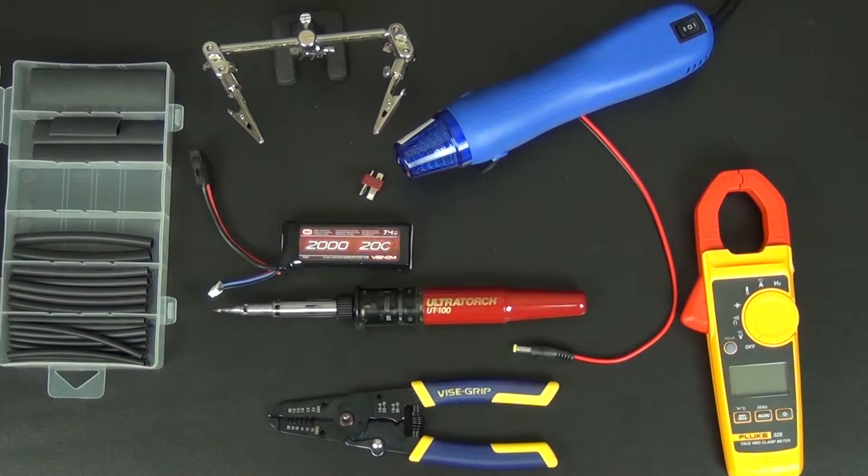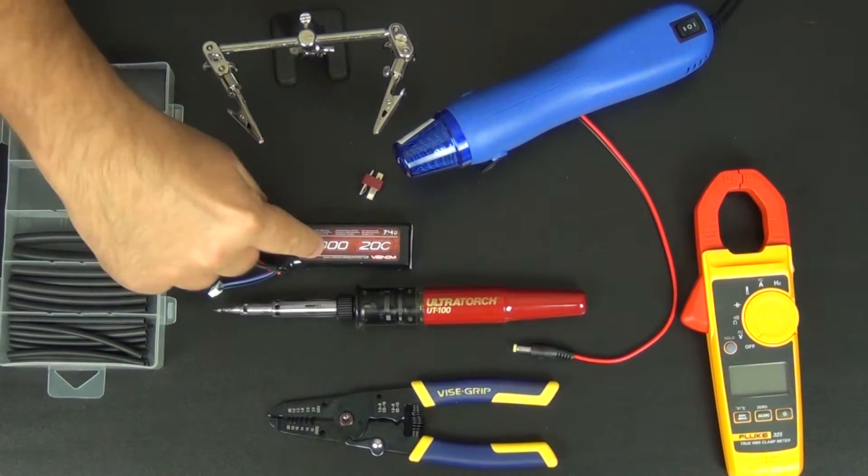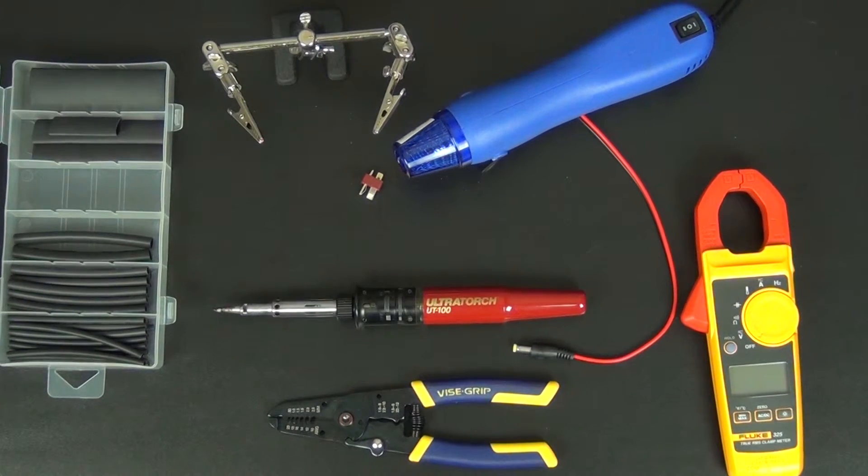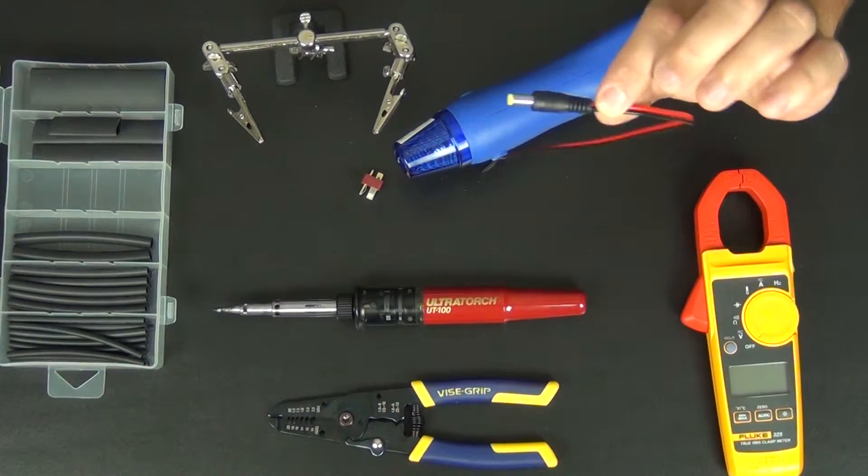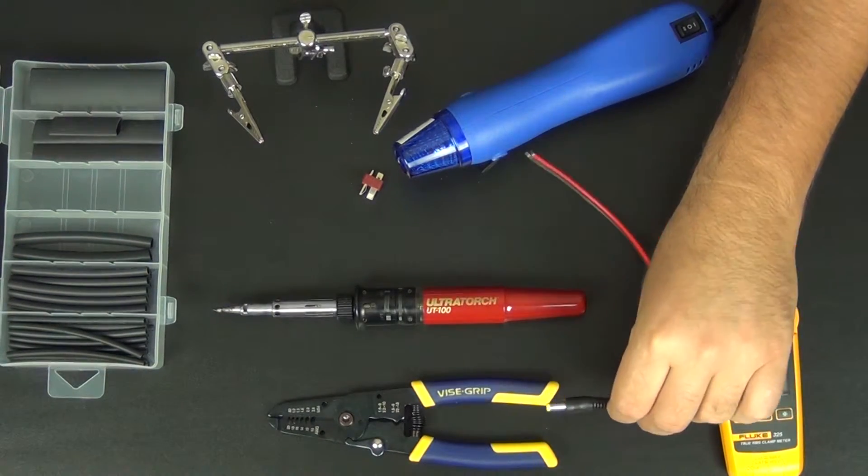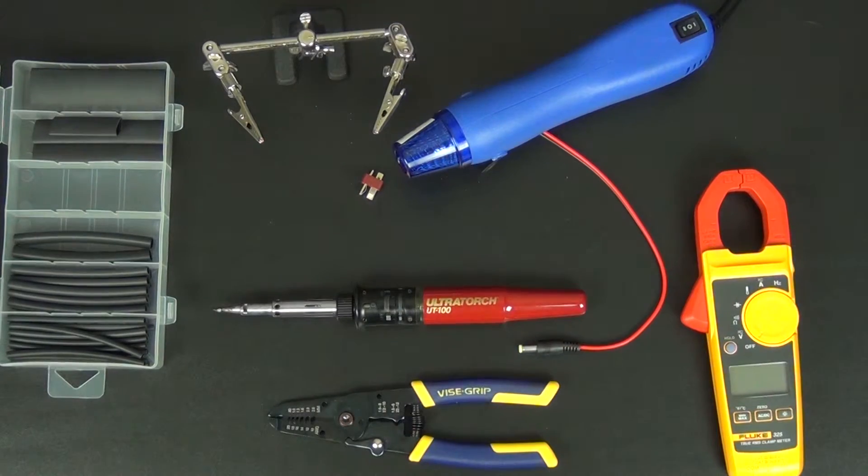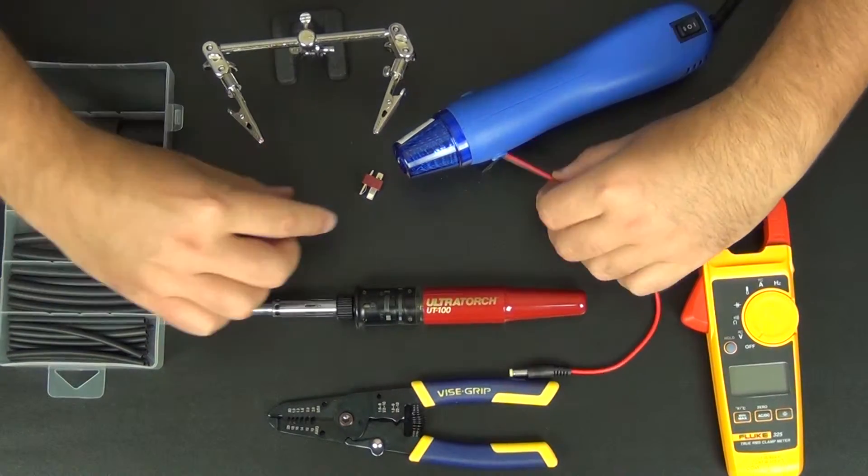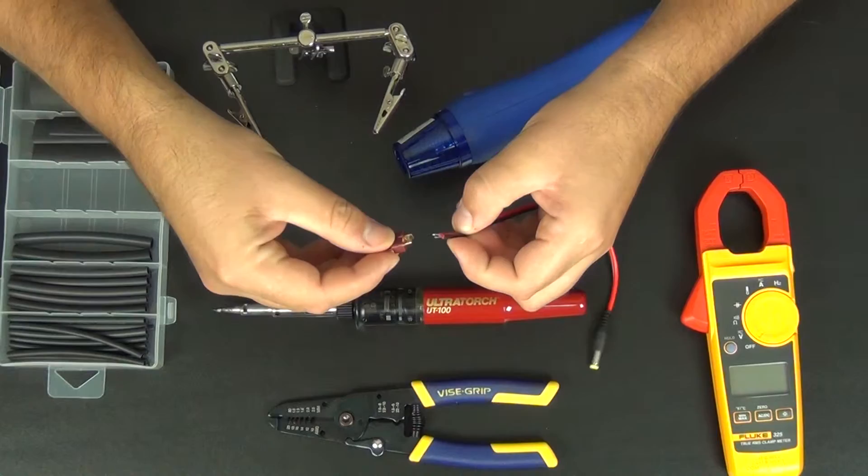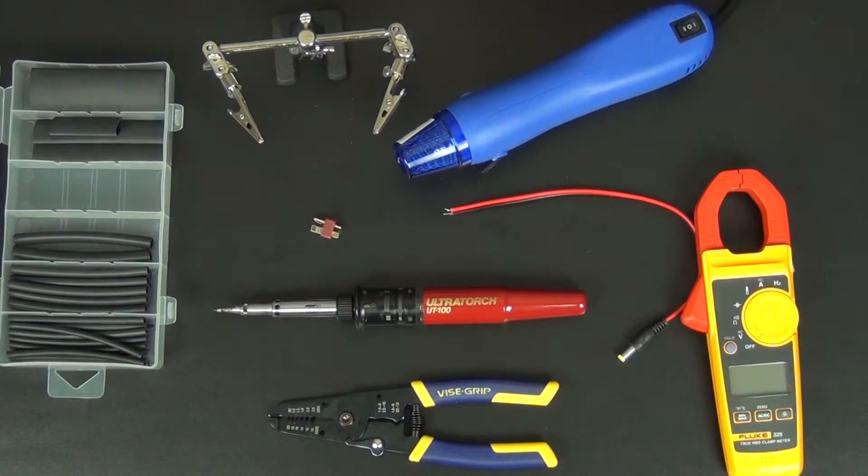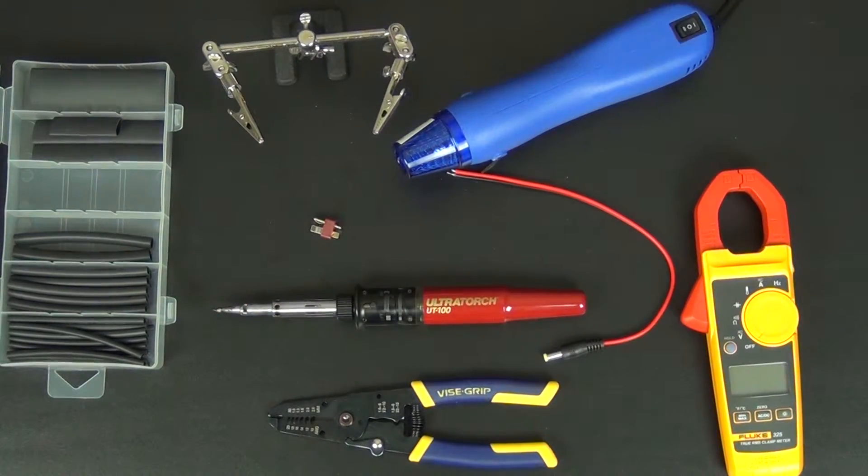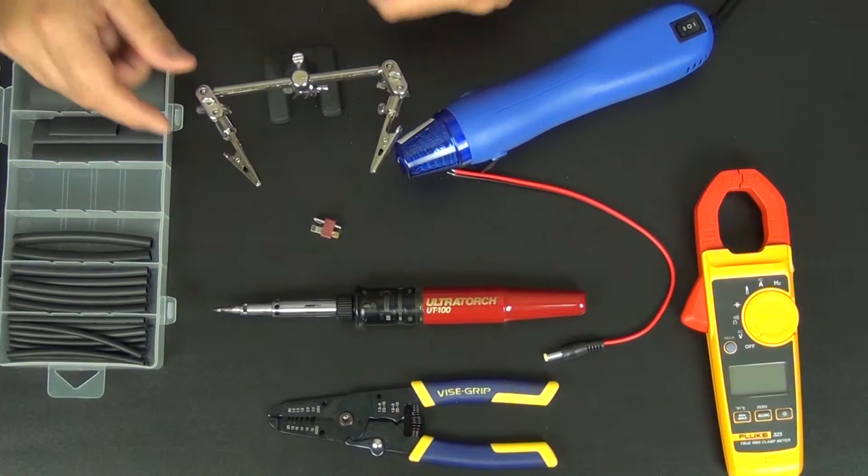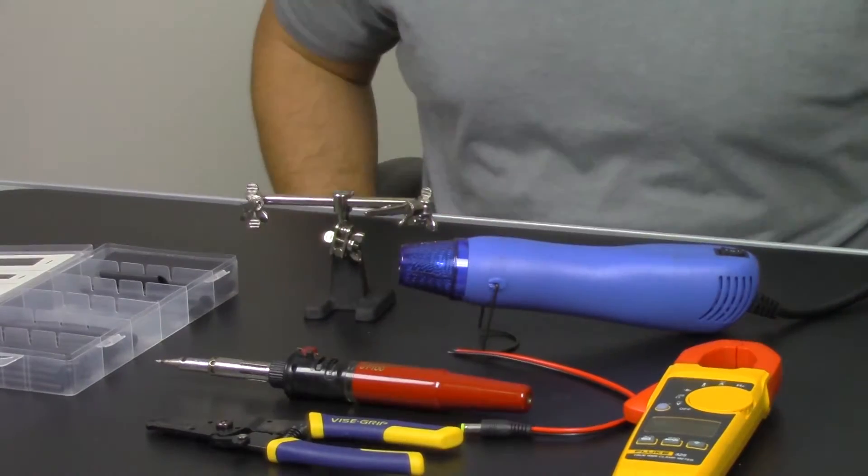Alright, so here are the tools we'll be using today for this project. We have our battery of course. We have our Dean style T-Plug adapter, and we have the male version of the 2.1x5.5mm plug. That is what we're going to be attaching to this Dean's T-Plug adapter to use with the Headplay unit. We also have this handy little tool here that will hold everything together while we're soldering.